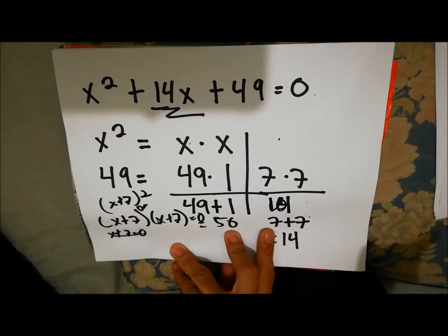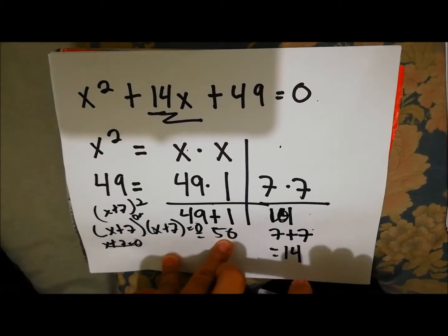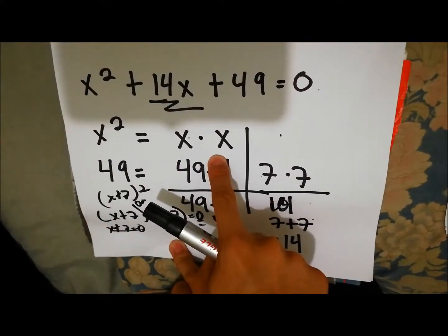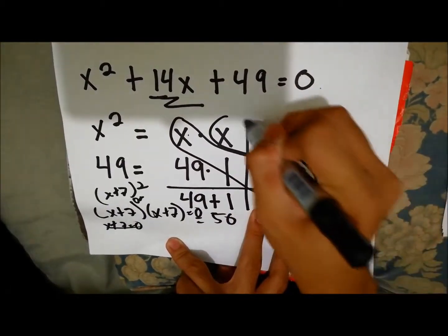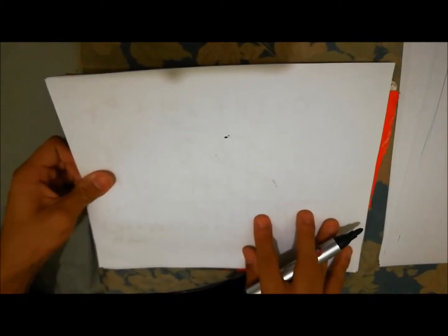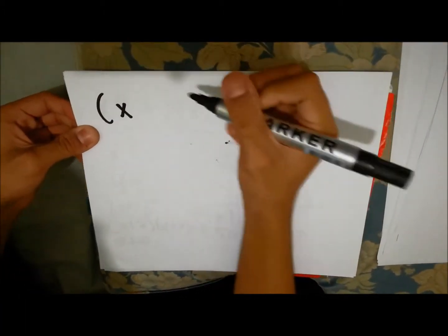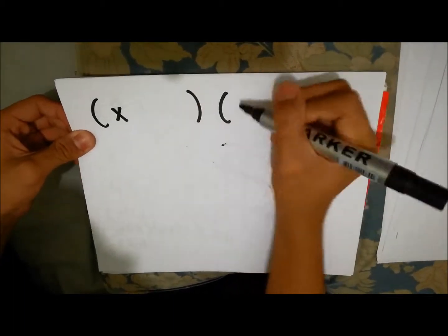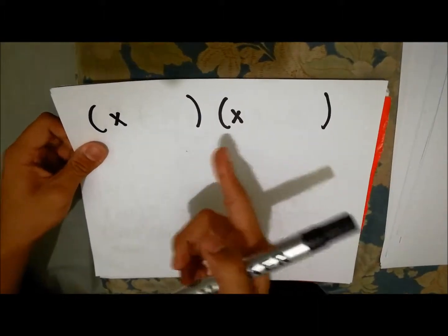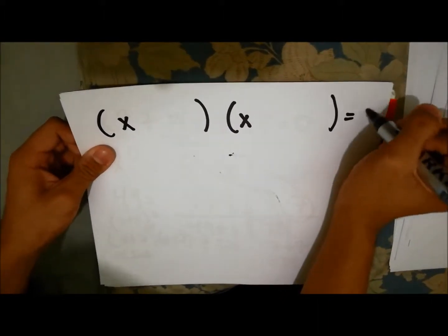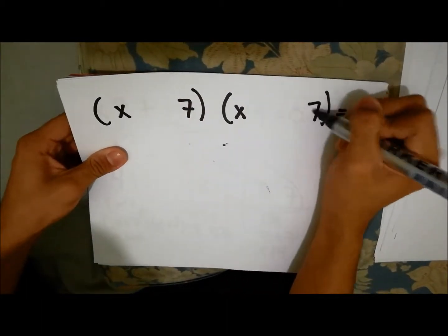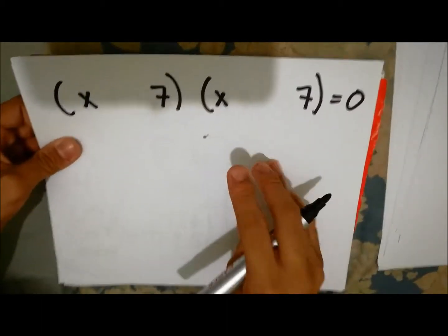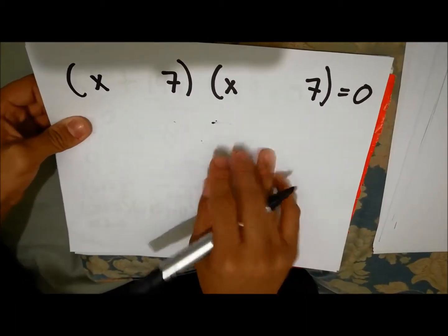Based on the trial and error method, the factors we got: for x squared it is x times x, and for 49 it is 7 times 7. Next, we will factor out using the ones we got from the trial and error method. x is used for the first term. For the last term, it will be 7 and 7. Since both have positive integers, we'll be using a positive sign — addition.